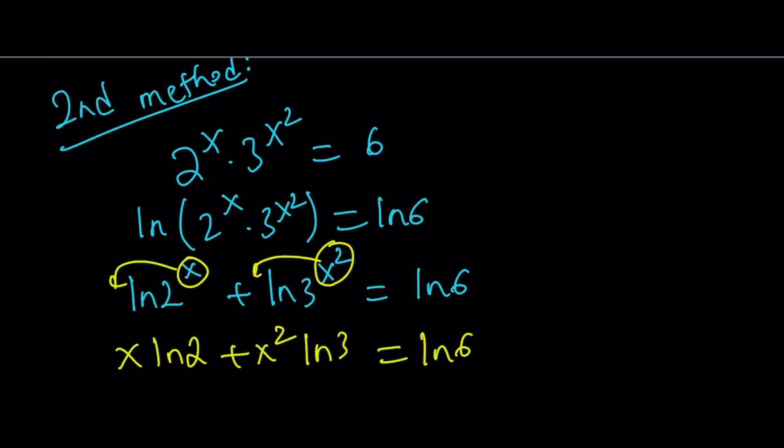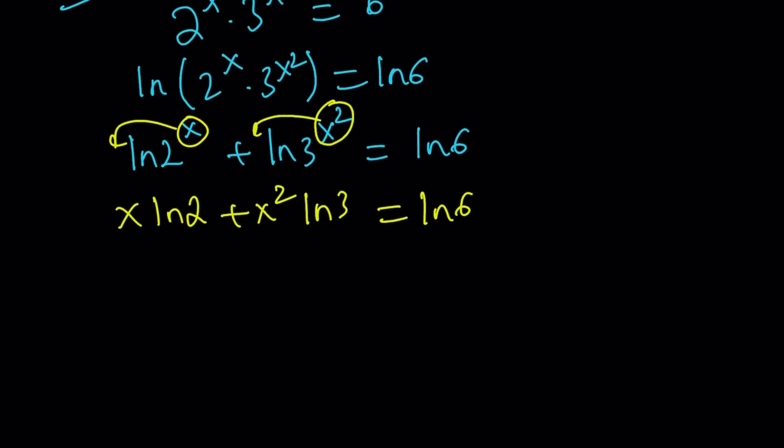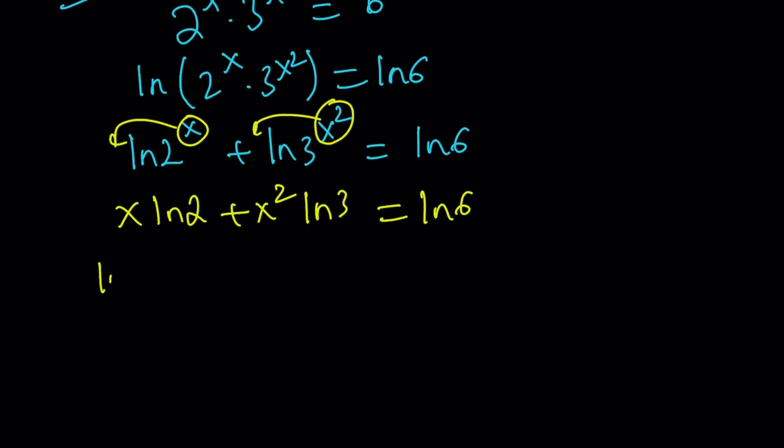And guess what? This is a quadratic equation in x. Let's rearrange the terms to make it look better, like more like a quadratic equation. So ln 3 times x² plus ln 2 multiplied by x minus ln 6 equals 0. What is a quadratic equation? It can be written as ax² plus bx plus c, where a does not equal 0. And our equation can exactly be written like that.